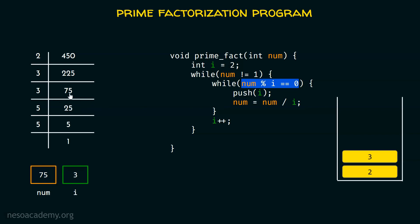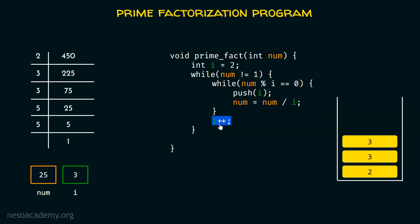Then we check again: is 75 divisible by 3? Yes — we get inside the inner while loop, push 3 onto the stack, and update num to 25. We check again: is 25 divisible by 3? No — 25 is not completely divisible by 3, so we exit the inner while loop and increment i by 1, making i equal to 4. 4 is a composite number. We check num mod i — 25 is not divisible by 4 either — so we exit and increment i again to 5.